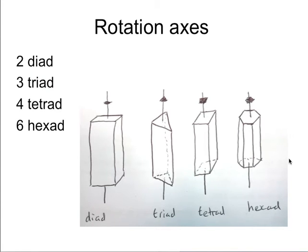Now I am going to move on to symmetry again. In the last lecture I mentioned some symmetry elements - for example a twofold rotation axis, which we call a dyad: a 180-degree rotation reproduces the object. A triad is a threefold rotation axis where a 120-degree rotation reproduces the structure. Then 90-degree and 60-degree rotations for tetrads and hexads. We do not have a fivefold rotation axis because it is not possible to have translational symmetry with a fivefold rotation axis.